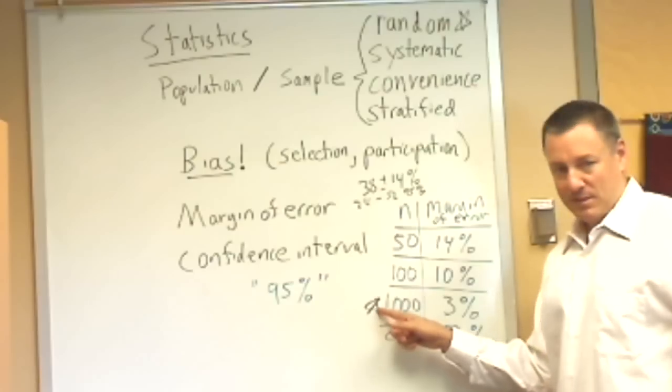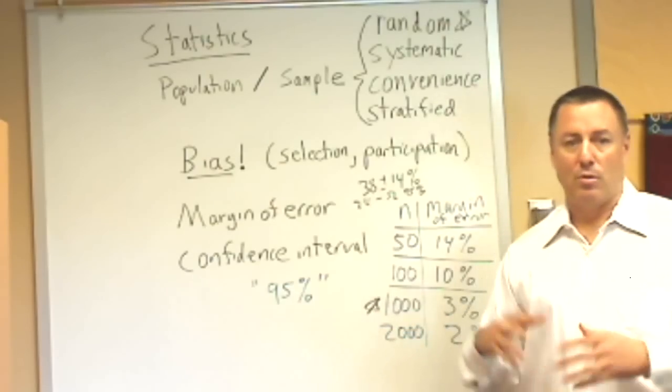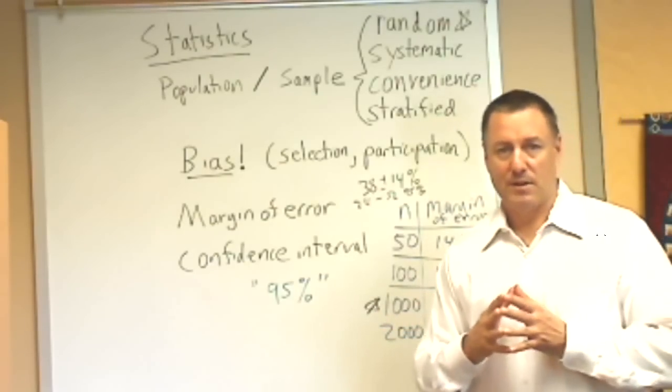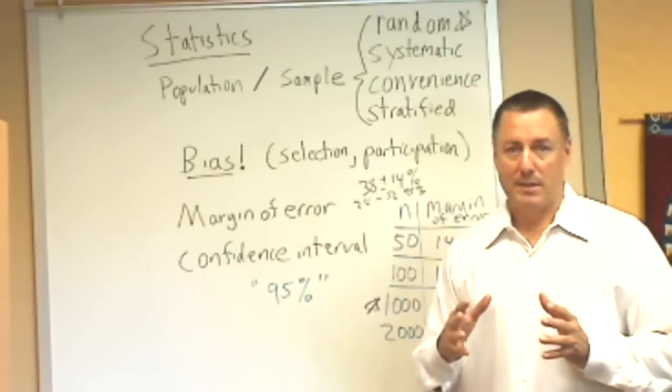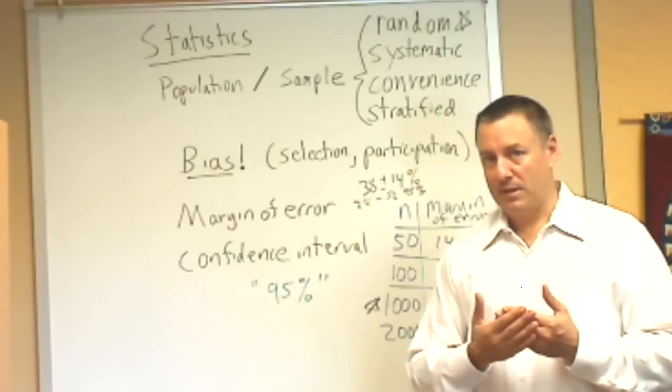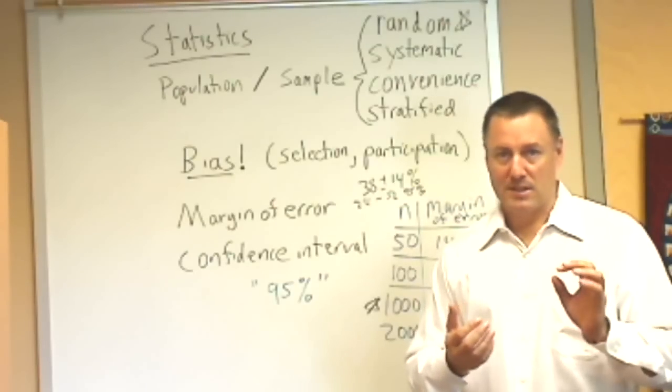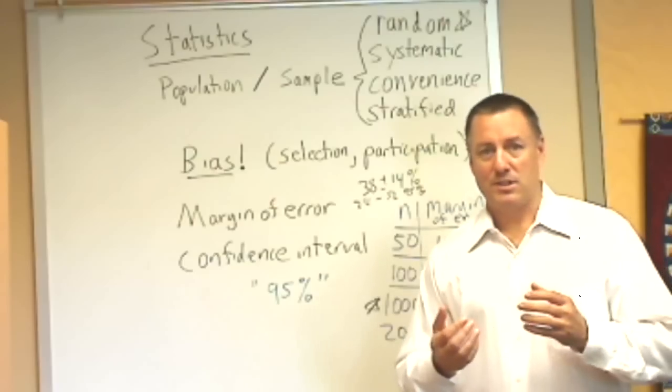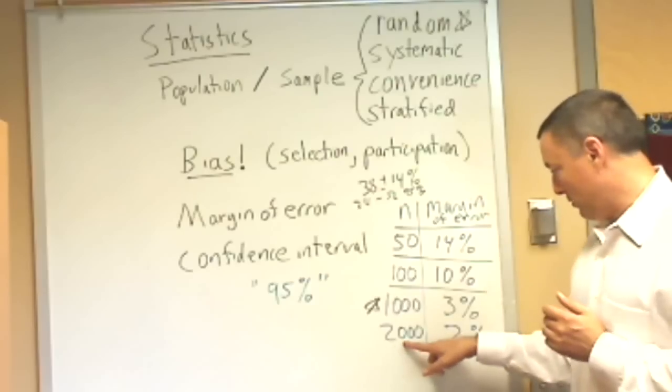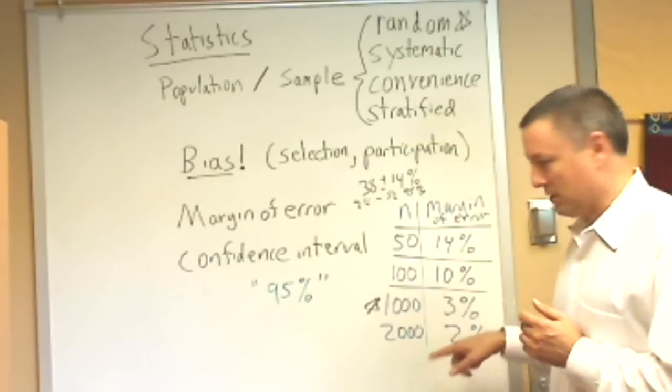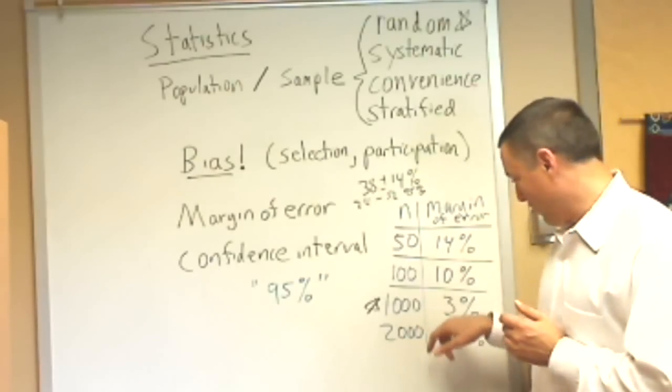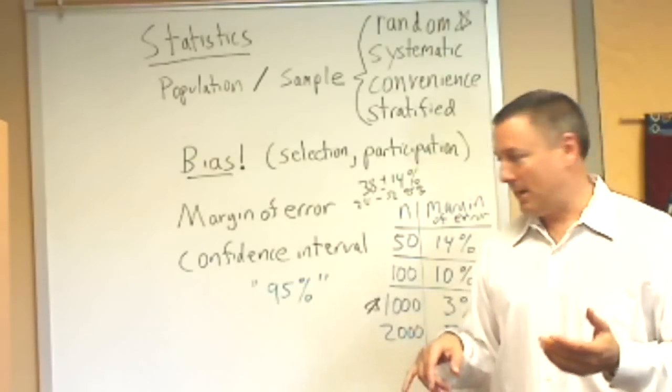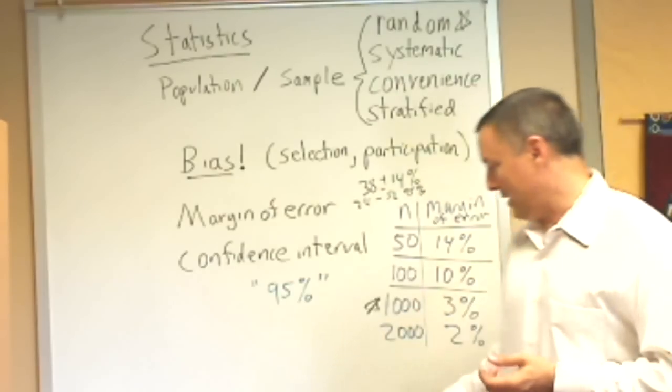At a thousand we're at plus or minus 3 percent, and I put a star here. This is the number you see on TV a lot. Gallup will poll a thousand people and they'll say the margin of error is plus or minus 3 percent. That's considered a pretty good error. Three percent is not terribly large and a thousand isn't a huge number. There's a diminishing return - all the way to 2000, you'll notice they've only dropped it to 2 percent. You double your work and only pick up one percentage point in accuracy.